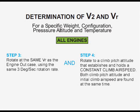We have now determined V-2 and VR with an engine out. The same VR and 3 degrees per second rotation rate are also used for the all engines case. However, the initial climb airspeed and pitch attitude will both be greater. This is an advantage since the greater climb airspeed is closer to the best angle of climb speed.